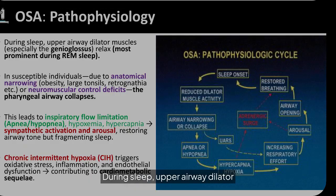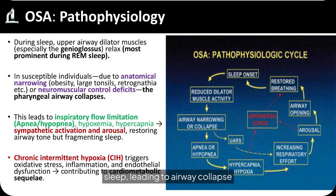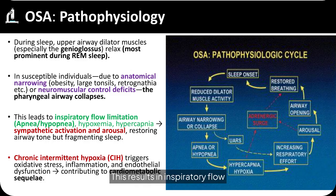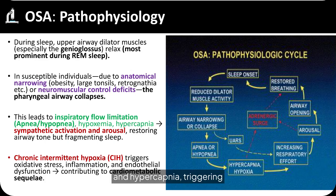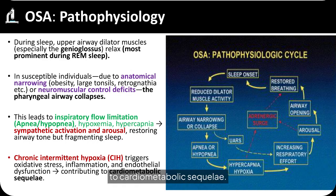During sleep, upper airway dilator muscles relax, especially during REM sleep, leading to airway collapse in susceptible individuals. This results in inspiratory flow limitation, hypoxemia, and hypercapnia, triggering sympathetic activation and arousal. Chronic intermittent hypoxia contributes to cardiometabolic sequelae.